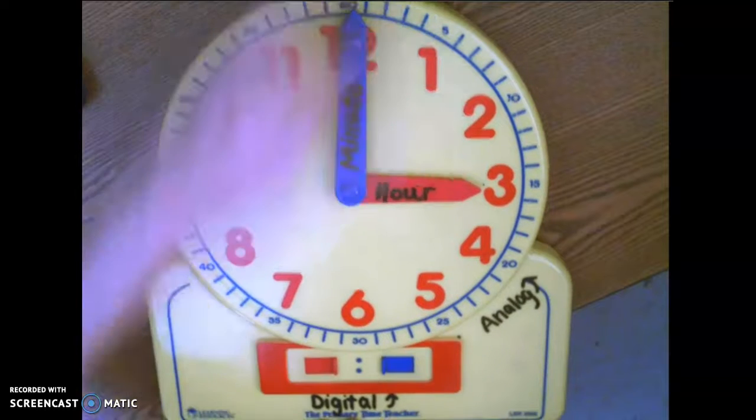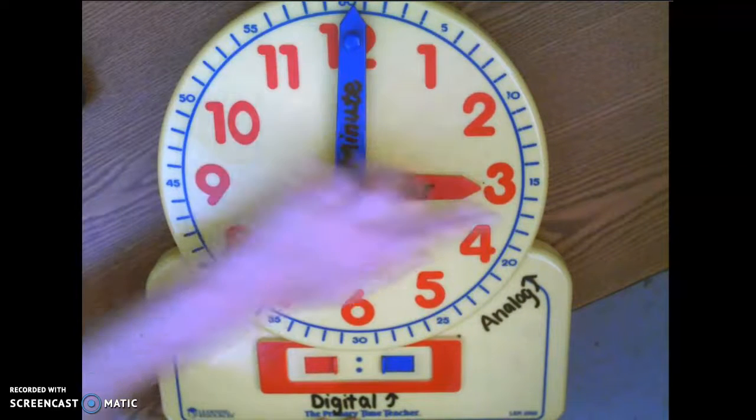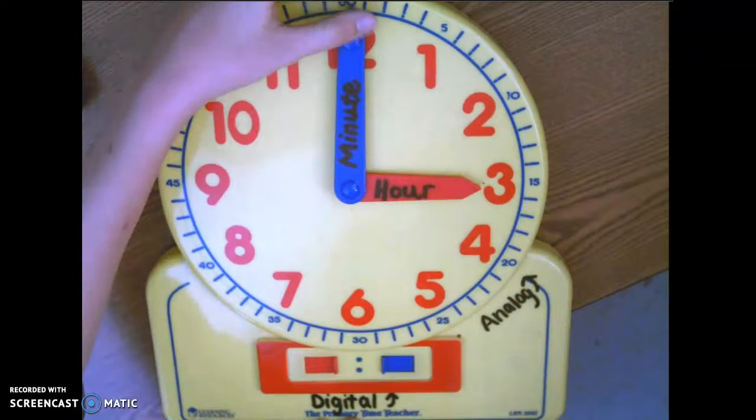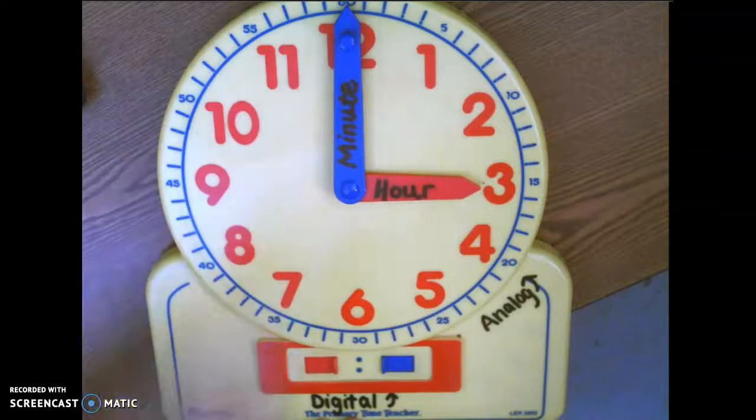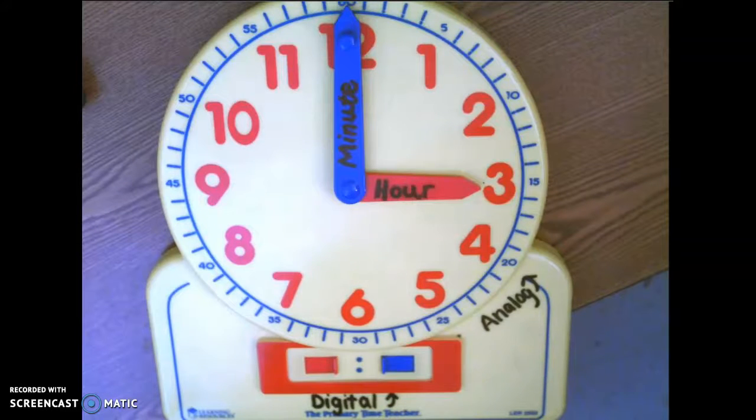And now our hour hand says three. Our minute hand is at the 12 or at the top of the hour, and so that says o'clock. It's three o'clock.